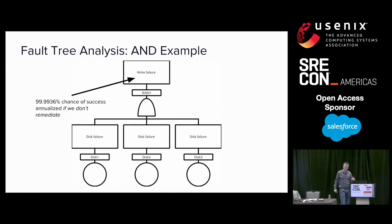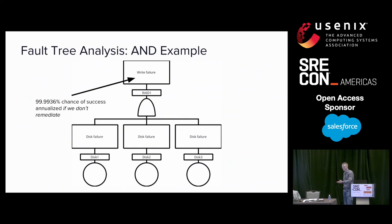There's one caveat though. The four nines of chance of success is the chance of success if we don't remediate any of these disks. The whole point of running redundant RAID arrays is to give yourself a chance to replace them when they fail. We get four nines if we leave the disks alone — you lose one disk one day, maybe five months later you lose another disk, and then you lose a third disk, and then you get the failure. So we need to set a remediation rate.